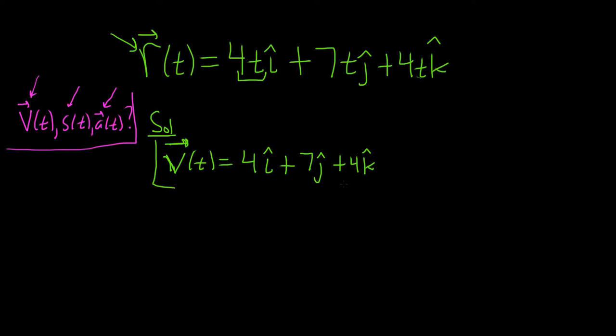So that's it. That would be the velocity function, or the velocity vector-valued function. To find the speed, recall that speed is the magnitude of velocity. So speed is equal to the magnitude of the velocity.